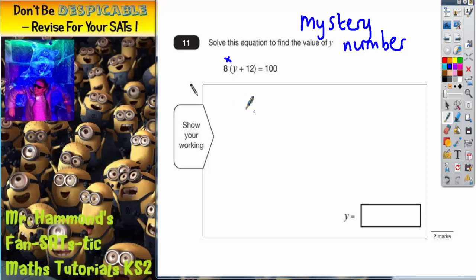Easiest way to do this is to set up a number machine. You should always start your number machine with the letter you're trying to find, and then you should describe what is being done to that letter. Well, we've always got to do the brackets first. So y add 12, then we're multiplying the whole bracket by 8. So y add 12, then times the whole thing by 8, and out pops 100.